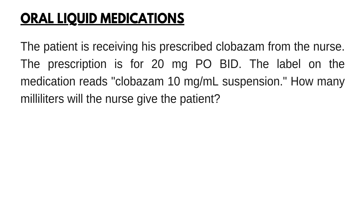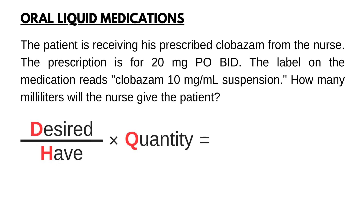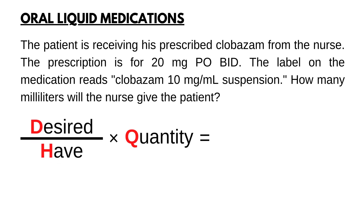The patient is receiving his prescribed clobazam from the nurse. The prescription is for 20 mg PO BID. The label on the medication which the nurse removes reads clobazam 10 mg per 1 ml suspension. How many ml will the nurse give the patient? First, set up the formula: desired over have times quantity.